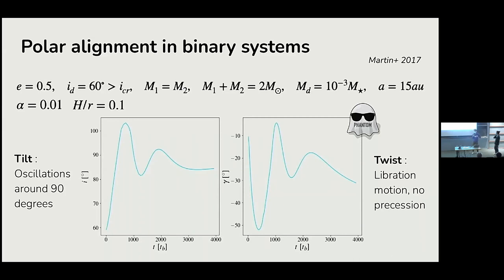We are studying tilt and twist as a function of time of the circumbinary disk, performing the radial average of the tilt profile and the twist profile. Looking at the tilt as a function of time, we can see that the inclination starts growing and oscillates around 90 degrees — the polar configuration. As for the twist, the disk undergoes a libration motion, not a precession motion. The global behavior — oscillations around 90 degrees plus libration motion — means the disk is polar aligned.